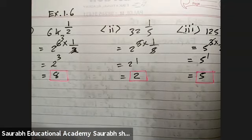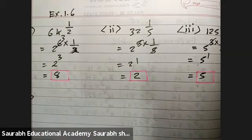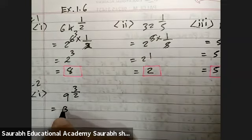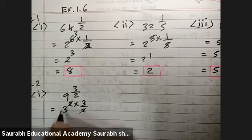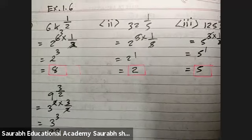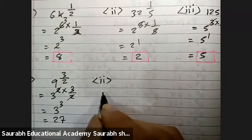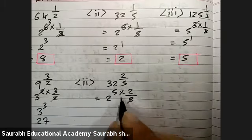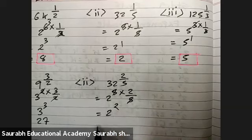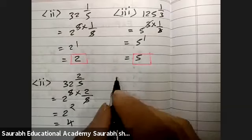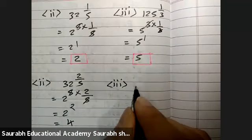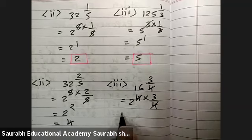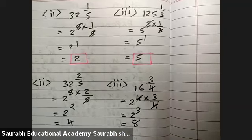Sum number 2. First: 9 raise to 3 by 2. That is 3 square into 3 by 2, giving 3 cube — 3 cube is 27. Second: 32 raise to 2 by 5, that is 2 raise to 5 into 2 by 5; the 5s cancel, so 2 raise to 2, answer 4. Third: 16 raise to 3 by 4, that is 2 raise to 4 into 3 by 4; the 4s cancel, giving 2 cube, that is answer 8.